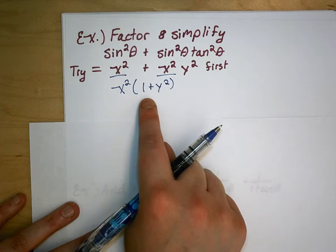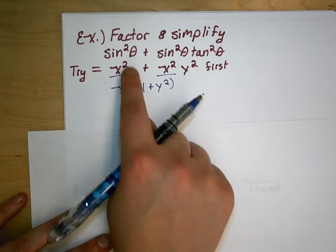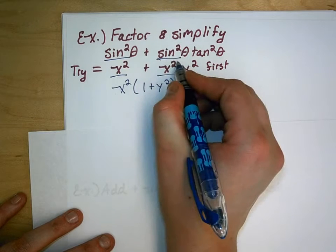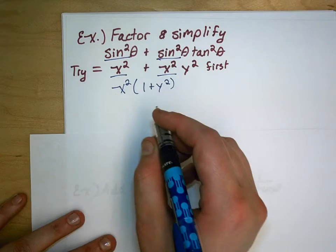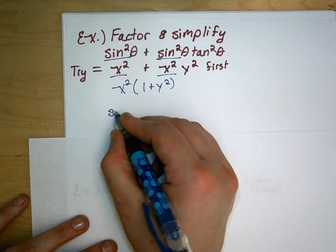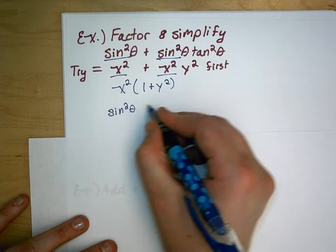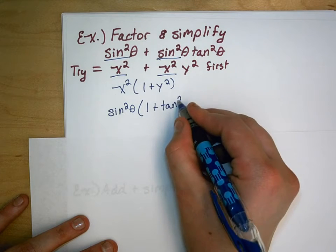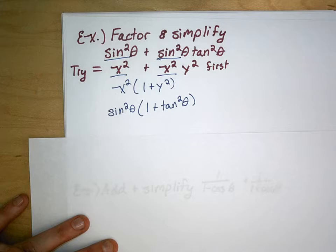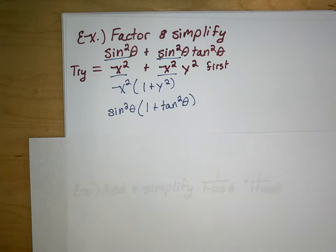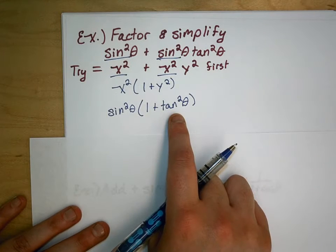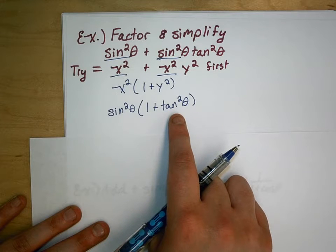Now in algebra, that's as far as I can go. With this trig expression, I have the sine squared in common with both terms. So I can pull that out and I get sine squared theta times 1 plus tan squared theta. If you look at your identity sheet, you should see that 1 plus tan squared theta is equal to secant squared theta.